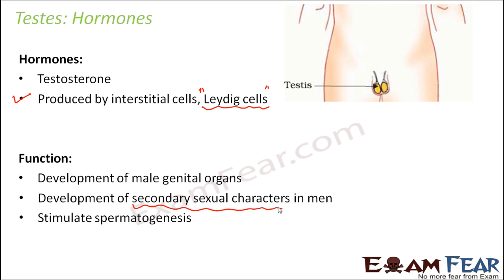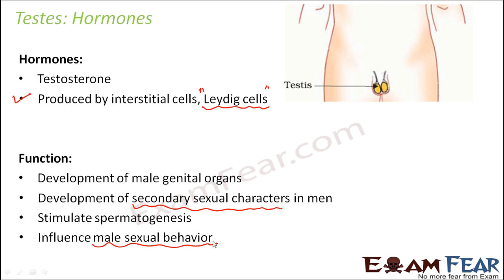Testosterone also stimulates spermatogenesis, that is the process of formation of sperms. It influences male sexual behavior, meaning the desire for sexual activity which is often termed as libido. Overall, testosterone is responsible for the development and maturation of all the organs which participate in reproduction in males, like the epididymis, vas deferens, urethra, and prostate gland.